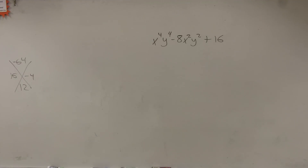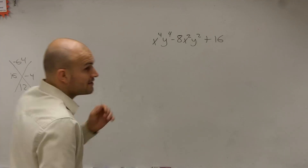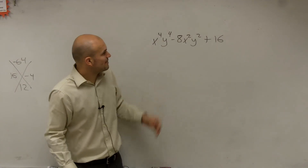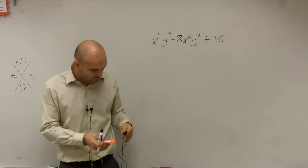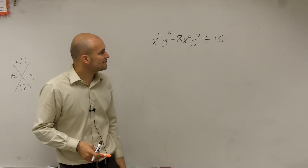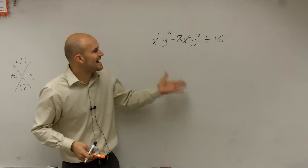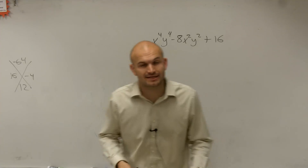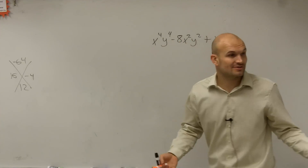So this is number 11, and we're looking at this problem. I have x to the fourth, y to the fourth, minus 8x squared y squared, plus 16. So I need to factor this.